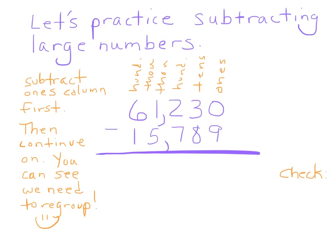When you're subtracting, same as with addition, you always go from left to right, so you start with the ones column. We have zero, and we want to take away nine, so we need to borrow and regroup. We're taking away one of the tens — that becomes two — and now we have ten ones. Ten ones minus nine ones is one. Now we have two tens, and we want to subtract eight tens. Can't do it, so we're going to borrow from our hundreds, leaving 100 there and putting ten tens right there. So now we have twelve tens minus eight tens, and that leaves us four tens.